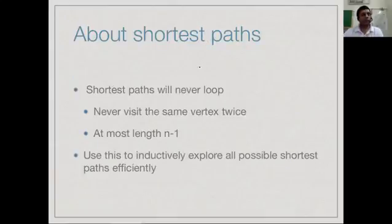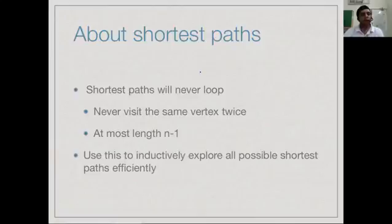We observed that a shortest path, even in the presence of negative weights, will never loop, because we can always remove the loop without increasing the length of the path. Therefore a shortest path never visits the same vertex twice and has length at most n minus 1. We exploited this in Bellman-Ford, and we will use it now for an inductive algorithm for all-pairs shortest paths.